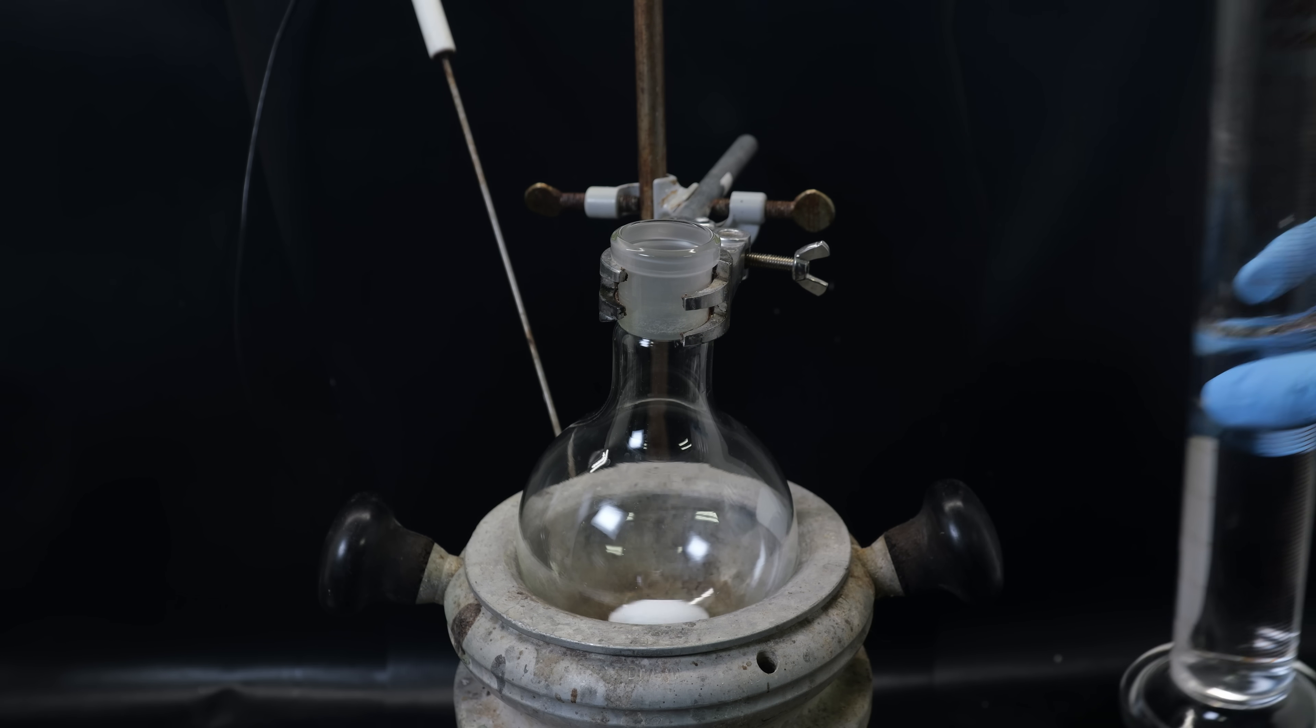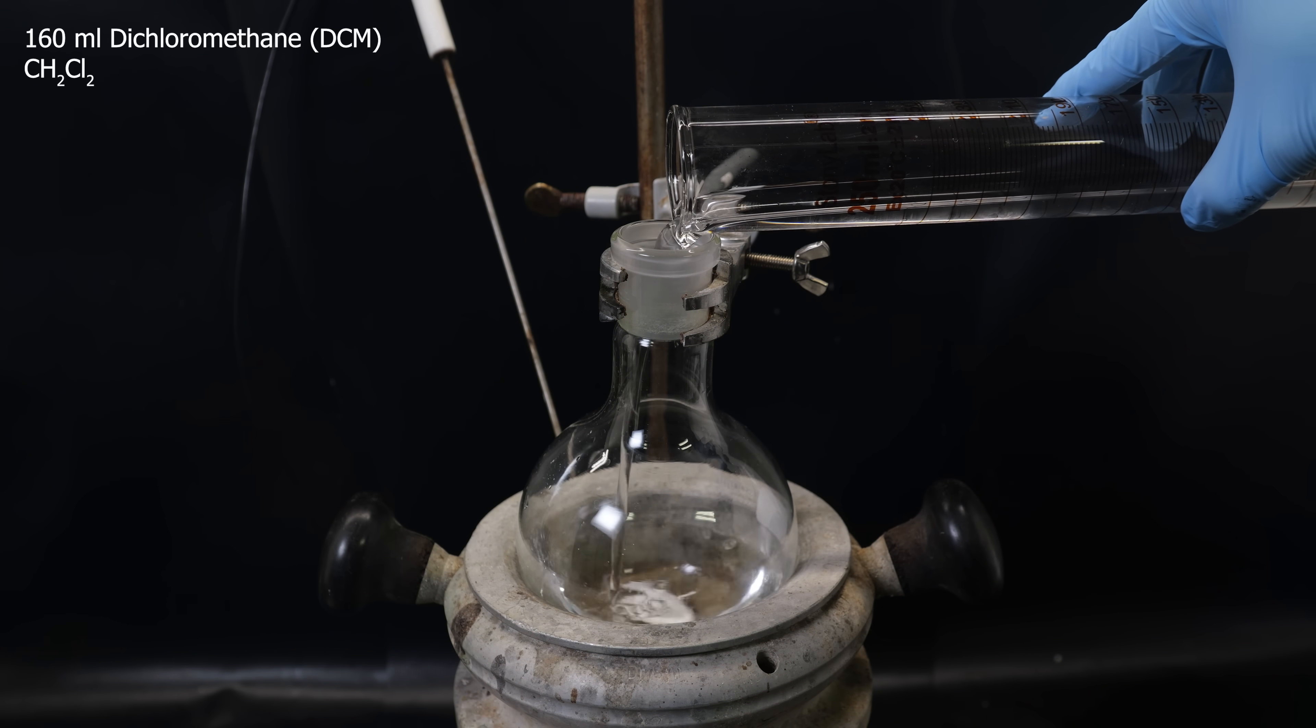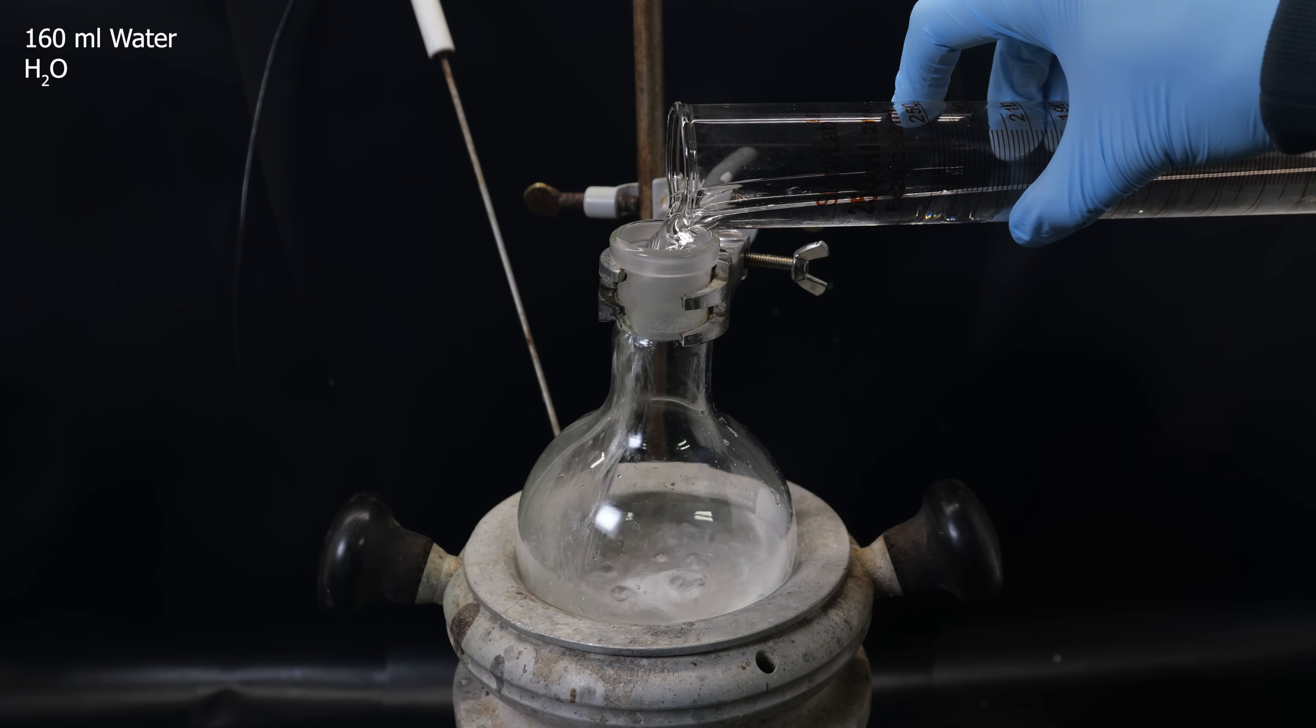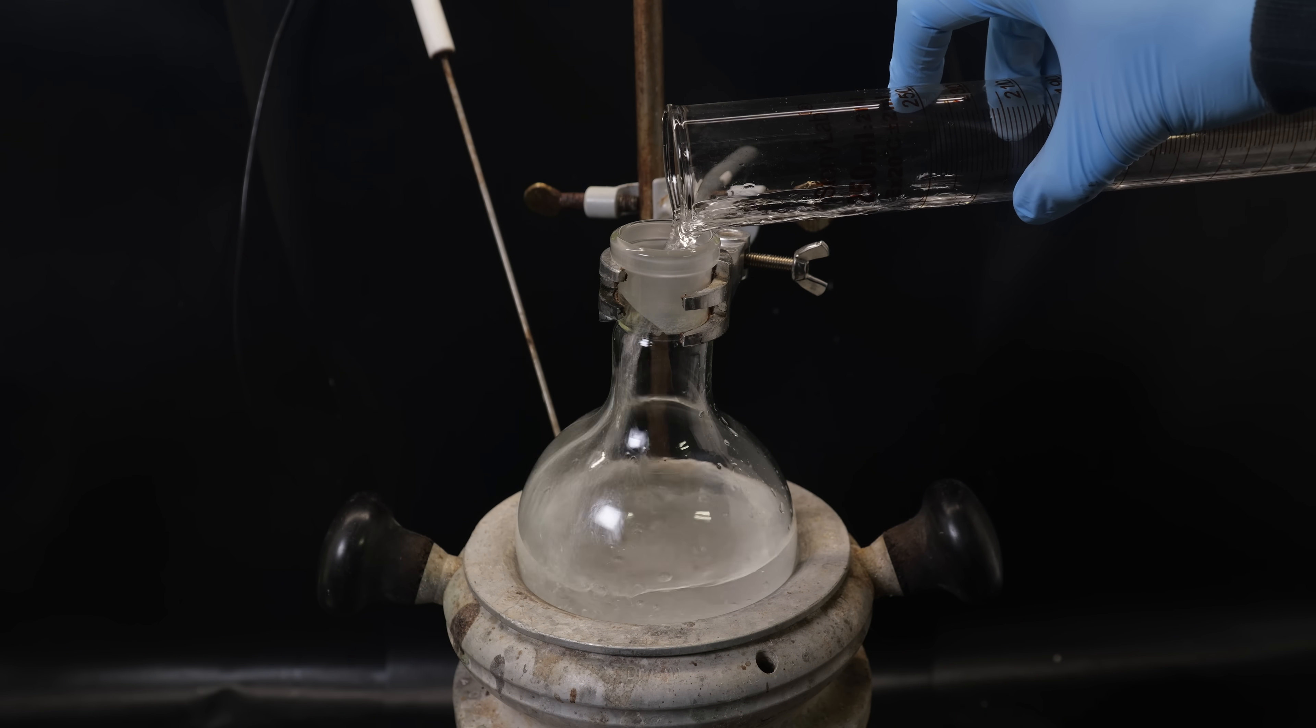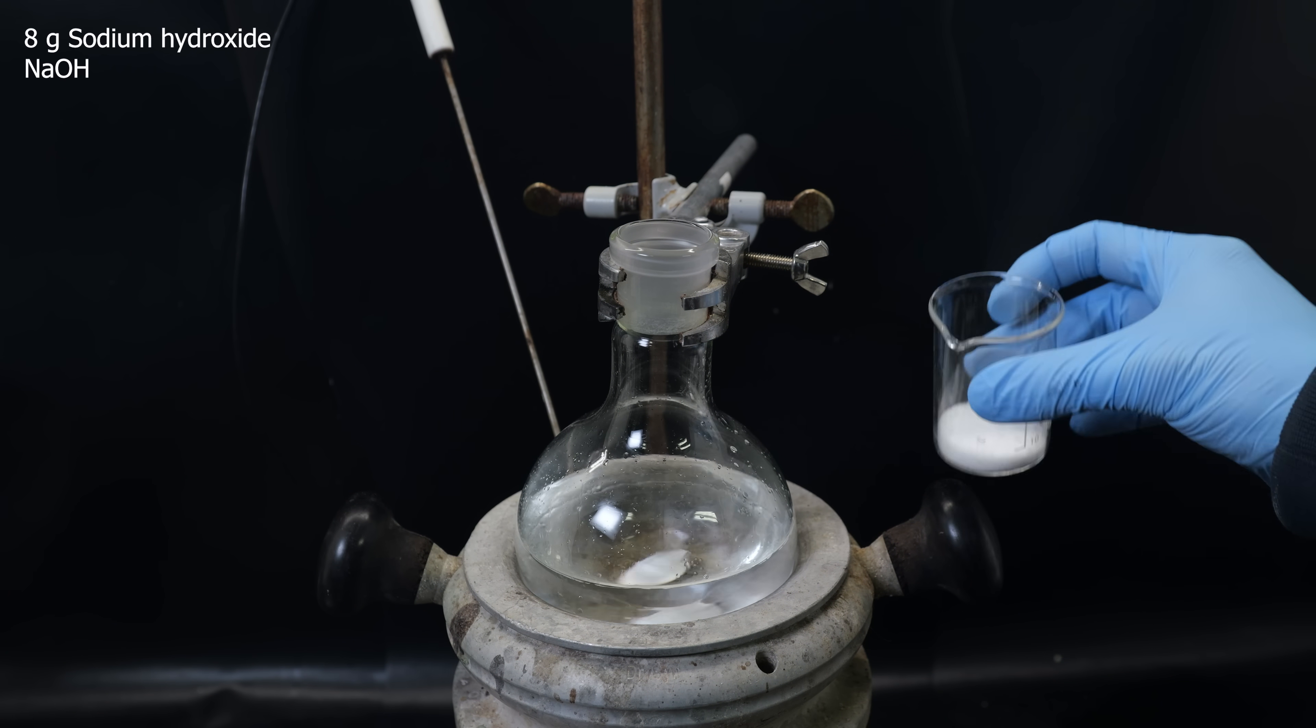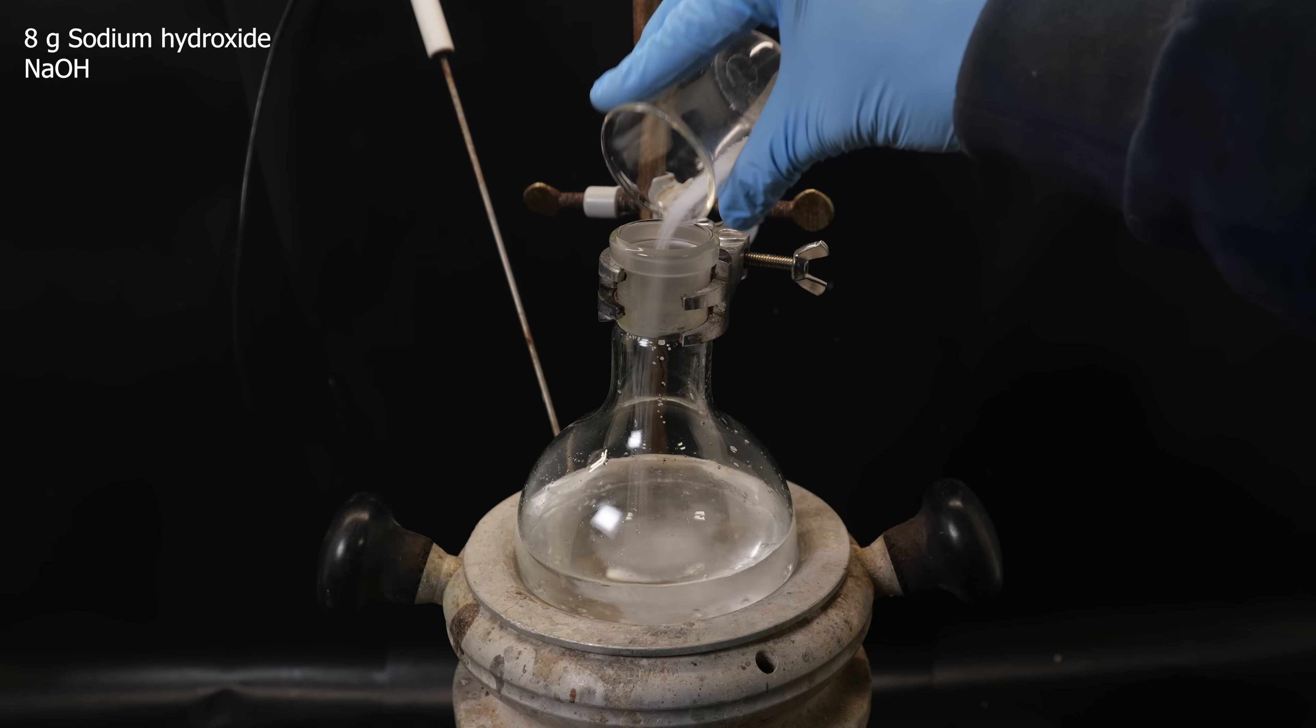So to get started, I set up a flask with a stir bar in a heating mantle, and add in 160 ml of the solvent dichloromethane. I then also add 160 ml of water as a second solvent, creating a biphasic mixture, since these two solvents don't mix. Into the water, I dissolve 8 grams of sodium hydroxide as a base.